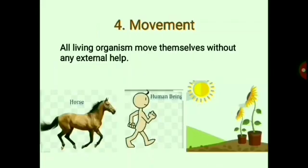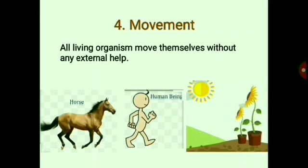Our fourth characteristic is movement. All living things move on their own in search of food and shelter. There are different types of movements: dogs, cows, cats, etc. walk; fishes swim; birds and some insects fly. But plants do not move from one place to another — however, plants can move their parts. As you are seeing in this picture, a sunflower plant turns towards the sun.